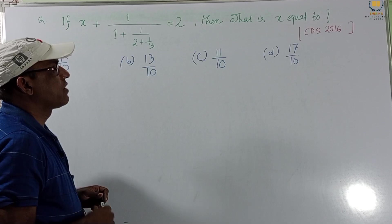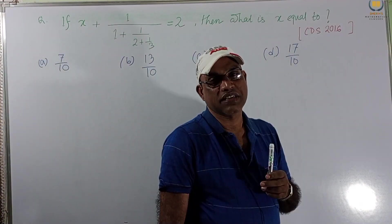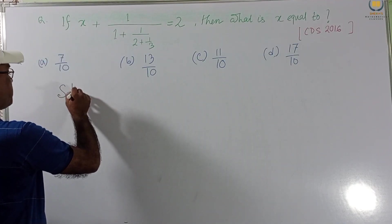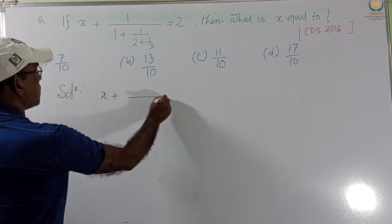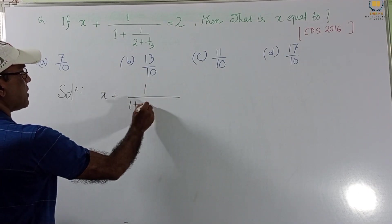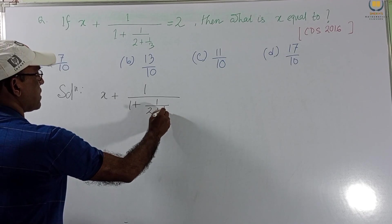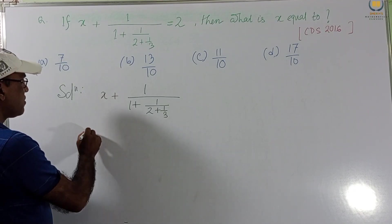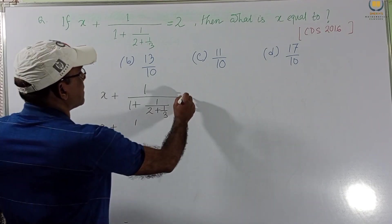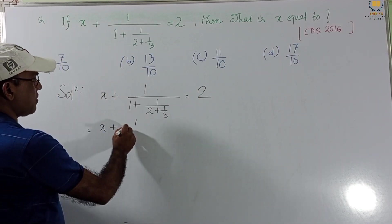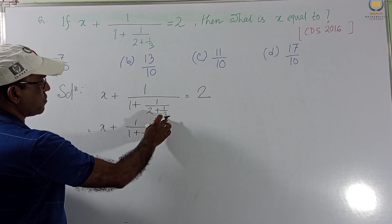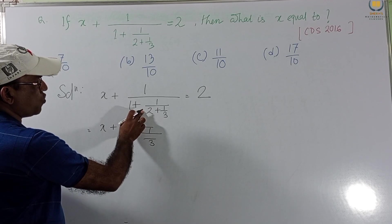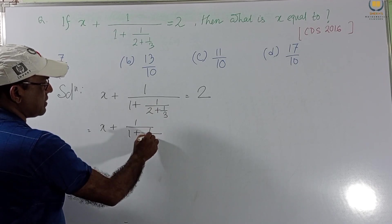We get this. And it was set in CDS 2016. Now we want to solve this problem. I am rewriting this. X plus 1 by 1 plus 1 by 2 plus 1 by 3. Rewriting this.